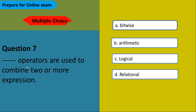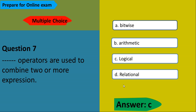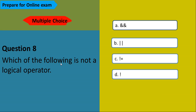These operators are used to combine two or more expressions. The options are bitwise, arithmetic, logical, and relational. The answer is C — logical. We use the AND operator, OR operator, and NOT operator to check if conditions are true together, so we use logical operators.